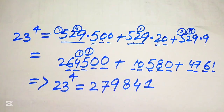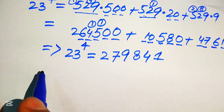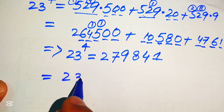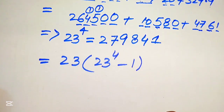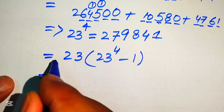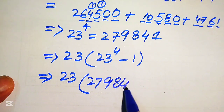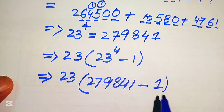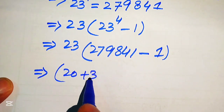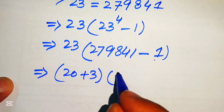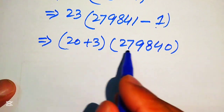Now we move backward and write our original expression: 23 times (23 to the power of 4 minus 1). We substitute 279841 for 23 to the power of 4, giving 23 multiplied by (279841 minus 1). We write 23 as 20 plus 3, and subtracting 1 gives 279840, so we now need to find 23 multiplied by 279840.